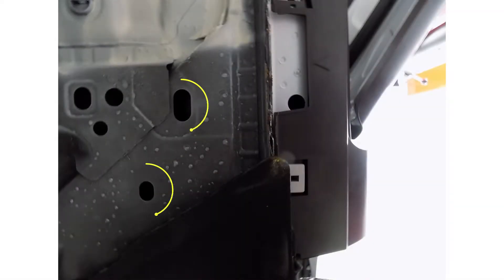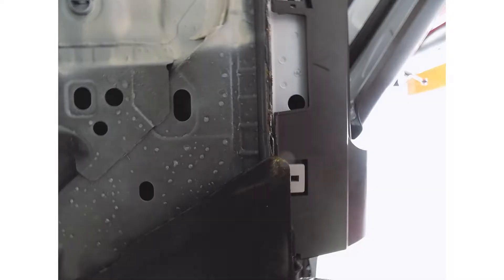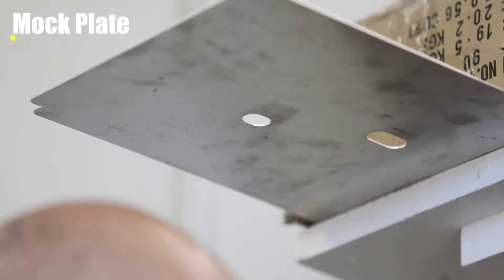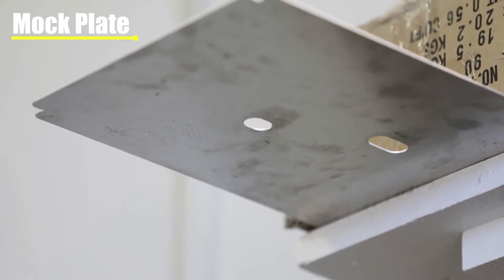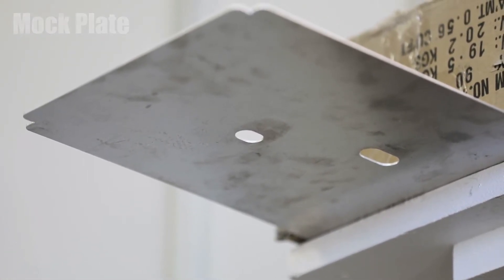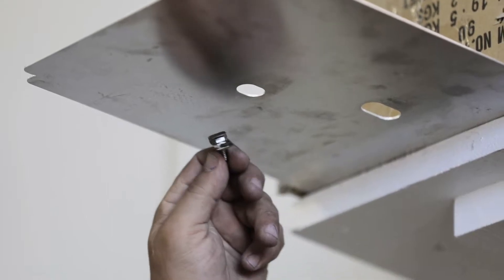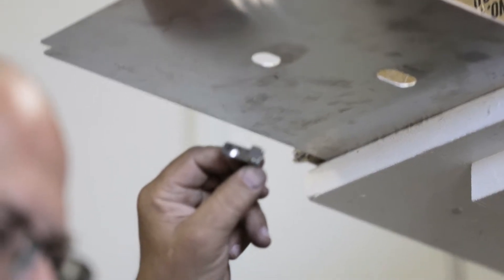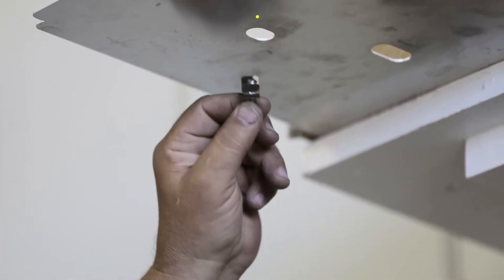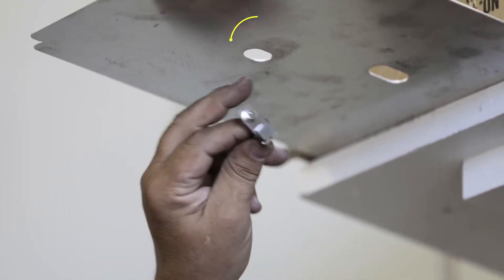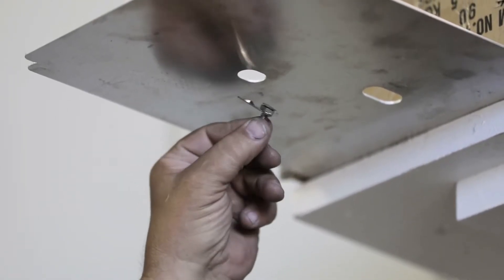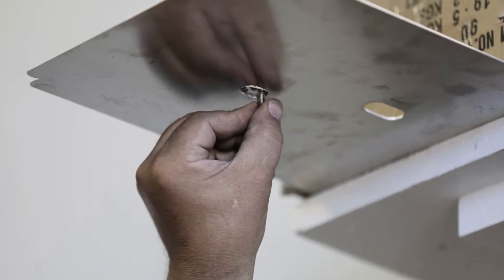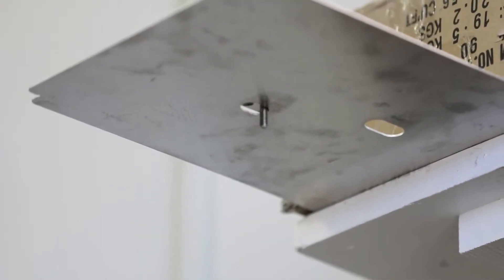To start, locate the two oblong holes located on the sheet metal under the vehicle. Take the shorter of the custom clips supplied with your kit and place it through the smaller front hole of the vehicle's floor. The clip will need to be carefully placed through the hole as shown, so that the edges of the clip rest on the metal of the floor.